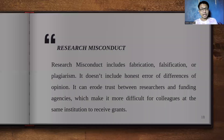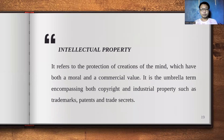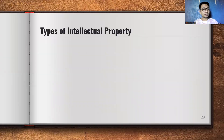Next is intellectual property. Since we need to respect intellectual property, we must discuss its types. It refers to the protection of creations of the mind, which have both moral and commercial value. Intellectual property is an umbrella term encompassing both copyright and industrial properties such as trademarks, patents, and trade secrets.